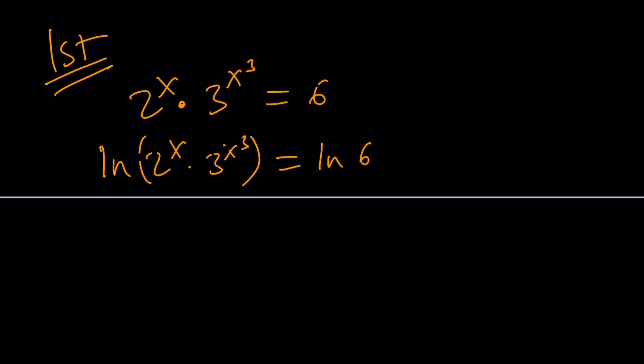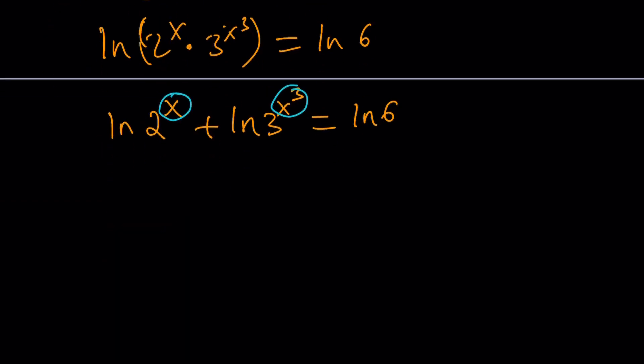And when you log or ln a product, you basically can write it as a sum of two ln's. And then using the power rule, you can bring these down. And that becomes x times ln 2 plus x cubed times ln 3 equals ln 6.